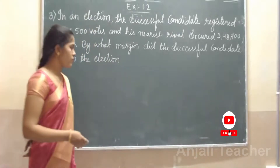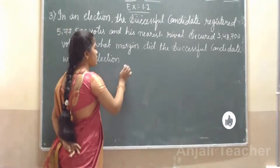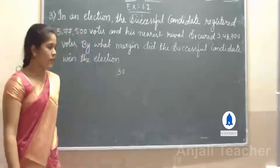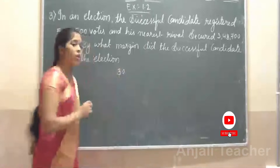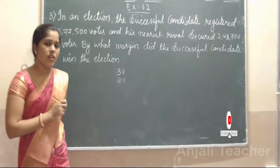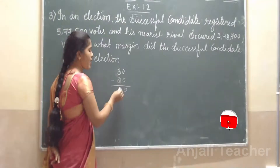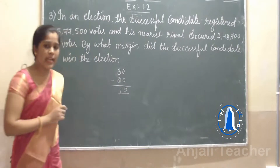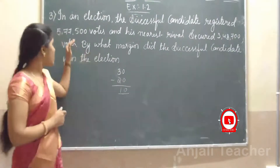Let's take an example: I have 30 pencils. Our difference is — by how many pencils do I have more than you? So here we should subtract. The successful candidate has 5,77,500 votes and the opposite candidate has 6,47,500 votes. By how much margin — by what margin — did the successful candidate win? So we should subtract here.